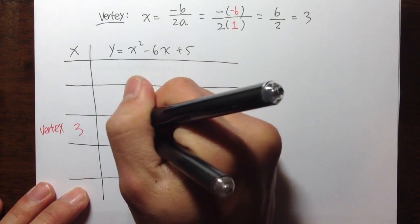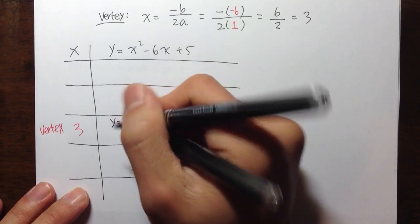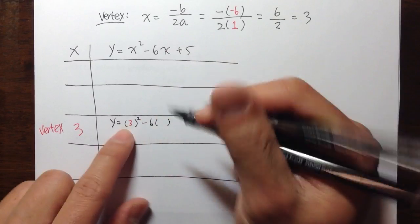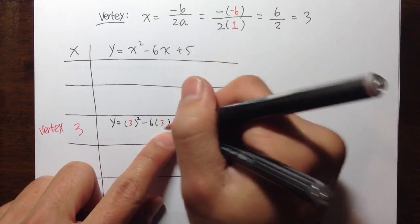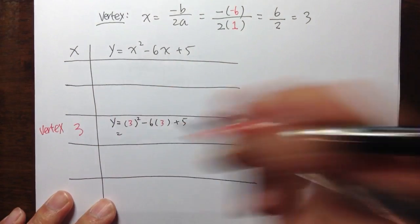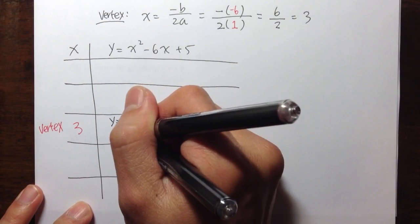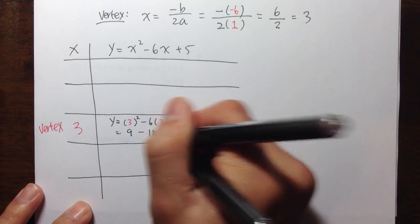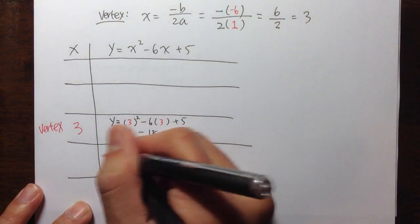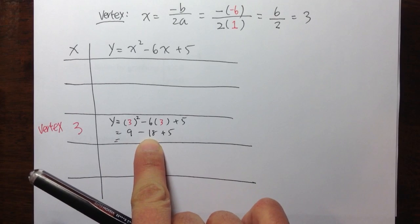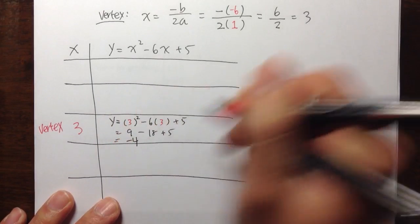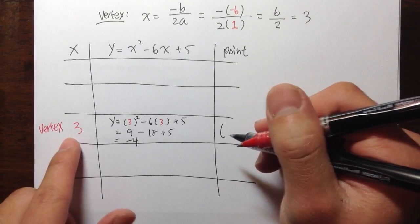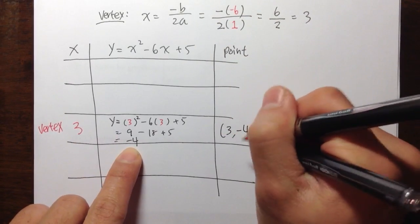y is equal to 3 squared minus 6 times 3 plus 5. So 3 times 3 is 9. Minus 6 times 3 is 18. Plus 5. So 9 minus 18 is negative 9, and then plus 5 is negative 4. So I have my point — the vertex is 3 comma negative 4.